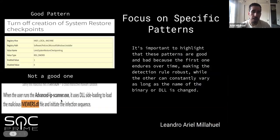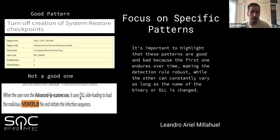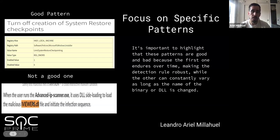And here is not a good example. Why is this not a good rule? As you can see here, the action says: when the user runs advanced IP scanner dot exe, it uses DLL sideloading to load the malicious iviewers DLL file and initiate the infection sequence. In this case, an adversary could change the advanced IP scanner name for any other one and also change the iviewers DLL name, so the rule will not be useful for a long period of time. The previous registry example will be useful long-term because it's related to a registry path for system restore checkpoints on Windows — that's the main difference.